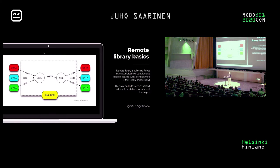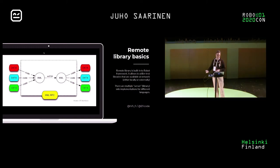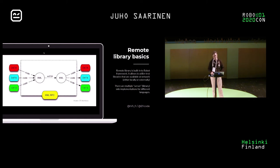The client side — the Robot Framework side — has been there for ages, and on the server side, the library side, there are implementations for multiple different languages. So basically you can choose what language you want to use, take the remote library or remote server XMLRPC server implementation which handles everything, and just write normal functions, normal methods, normal code with the language you like.